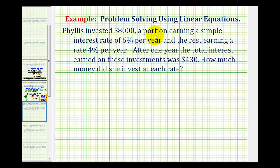Phyllis invested $8,000, a portion earning a simple interest rate of 6% per year and the rest earning an interest rate of 4% per year. After one year, the total interest earned on these investments was $430. We want to know how much money she invested at each rate.